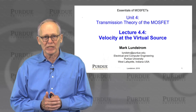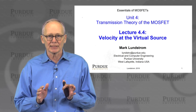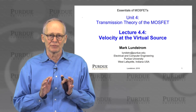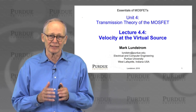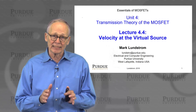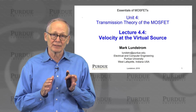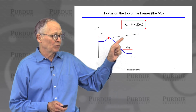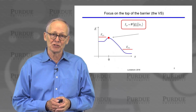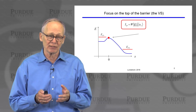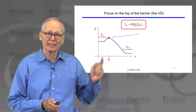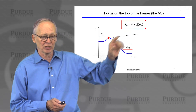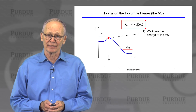In the last lecture, we discussed the IV characteristics of a ballistic MOSFET, and we have been focusing on the virtual source as we've been developing our understanding of MOSFETs. What I'd like to do in this lecture is to look at the velocity of electrons at the virtual source. We have been focusing on the top of the energy barrier between the source and the channel — the location we refer to as the virtual source — and we know that current is charge times velocity. We'd like to examine the velocity now.